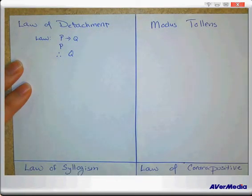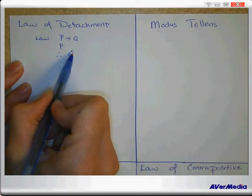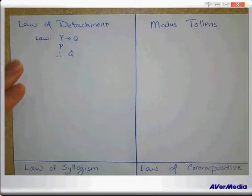An example I use for this: if my daughter Cora cleans her room, then she can play with her friends. Cora cleaned her room, therefore she can play with her friends. So it's a very easy way of seeing this, but here's some other ways of representing the same thing.